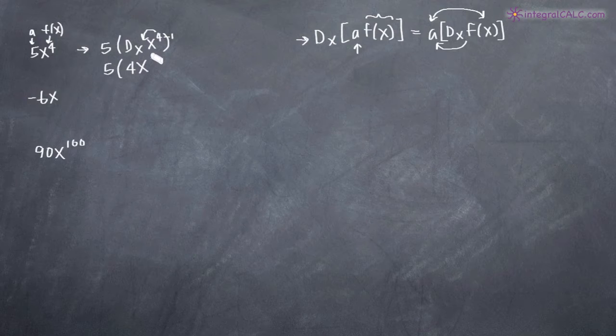So 4 minus 1 is 3 and if we simplify this by multiplying by the constant a which we factored out, 5 times 4 is 20 so we end up with 20x^3.